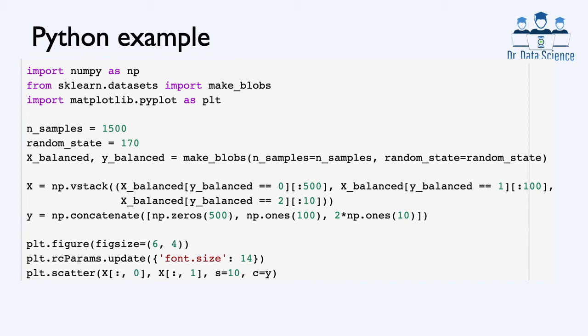We're going to create 1500 samples and make this dataset imbalanced. We take the original dataset generated by make_blobs: from class 0 we keep 500 samples, from class 1 we keep only 100, and from class 2 we take only 10. So x has 610 samples in total — 500 from class 0, 100 from class 1, and 10 from class 2. We also generate the label vector y, showing labels 0, 1, and 2.